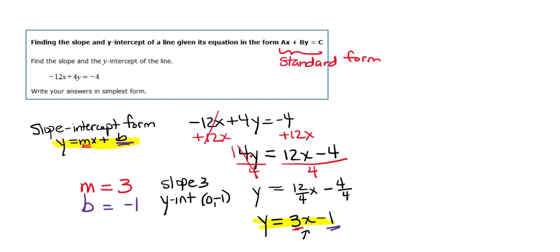So we've answered the question. The slope is 3 and the y-intercept is negative 1. I hope you found this video helpful. If you did, please remember to give it a thumbs up. That helps other students to find the video.